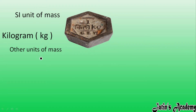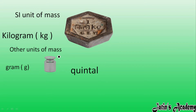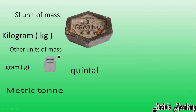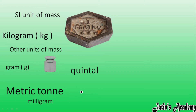Instead of kilogram, we also have other units of mass. For example, we have gram to measure small quantities. We have quintal to measure big or larger quantities. We have metric ton, used to measure very heavy things. We also have milligram, used to measure very small quantities.